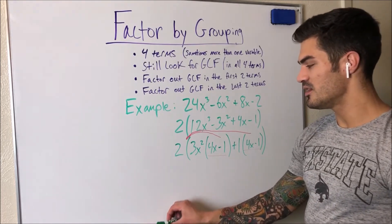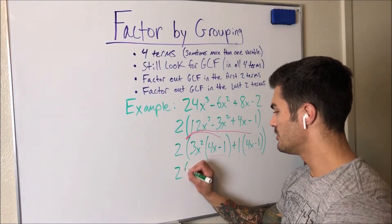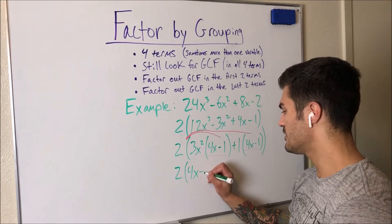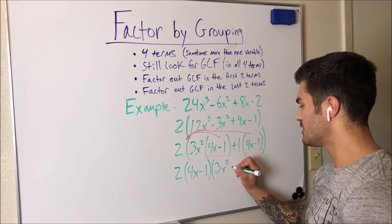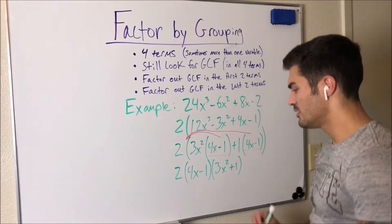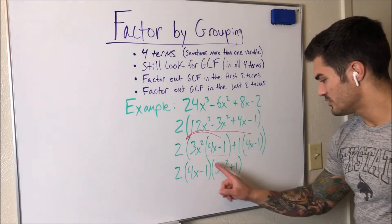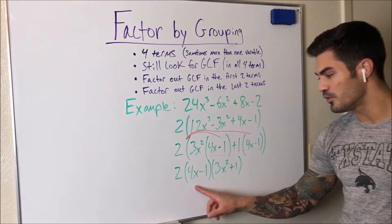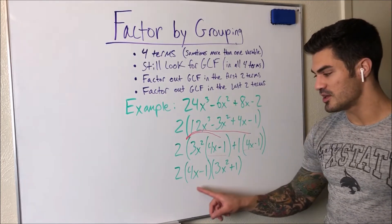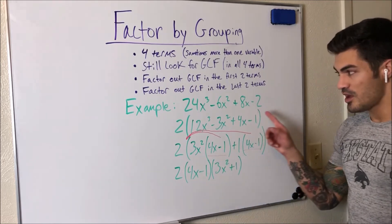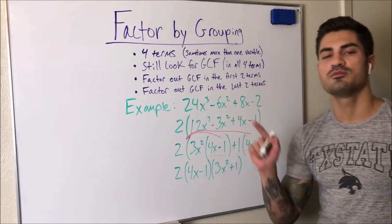So the final factored form is two times (4X minus one) times (3X squared plus one). If you want to verify, you would FOIL the binomials first and then distribute the two back in, and you should get back to the original polynomial. So this is the fully factored form.